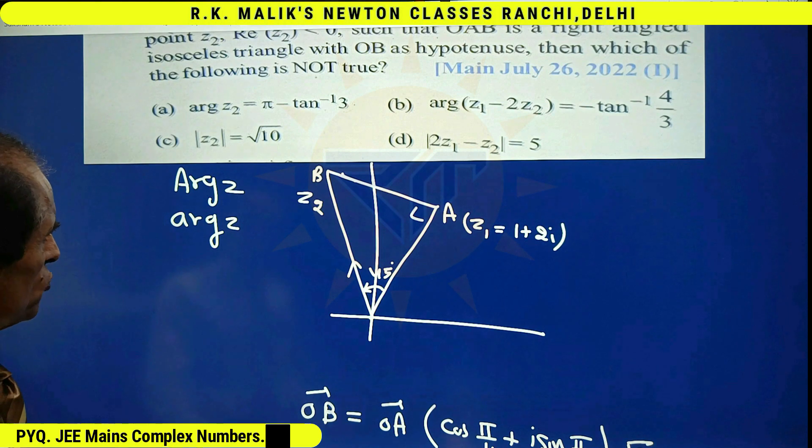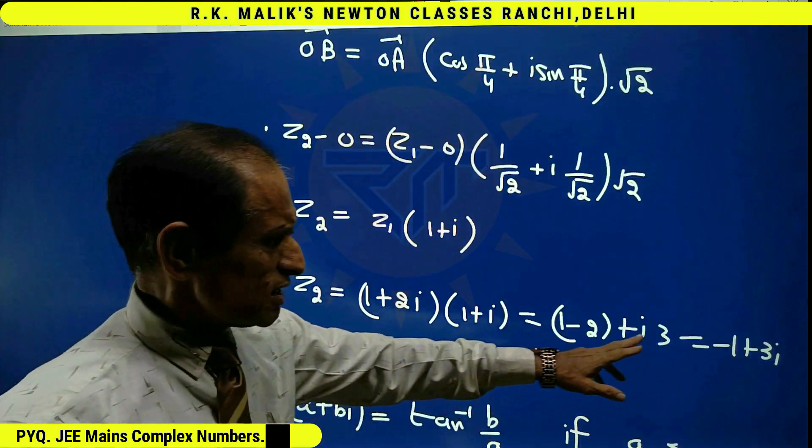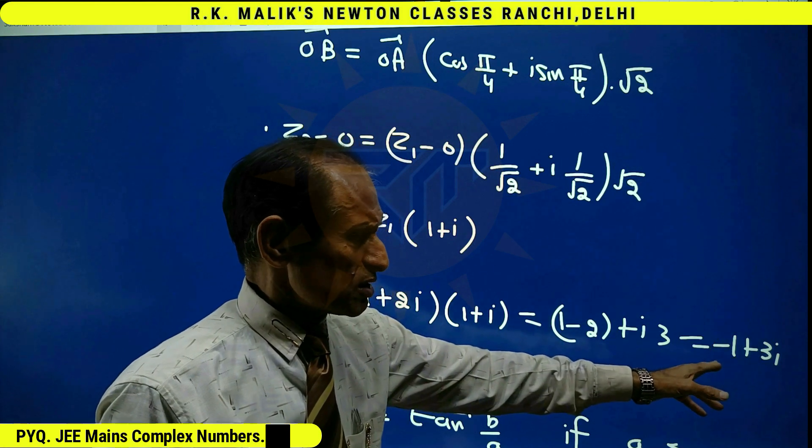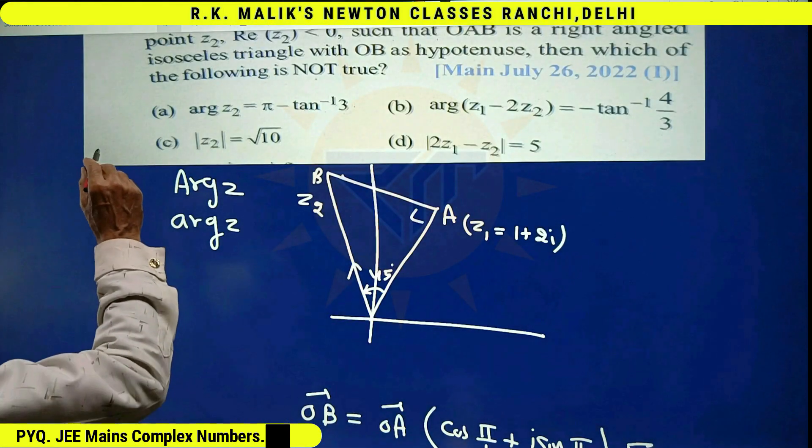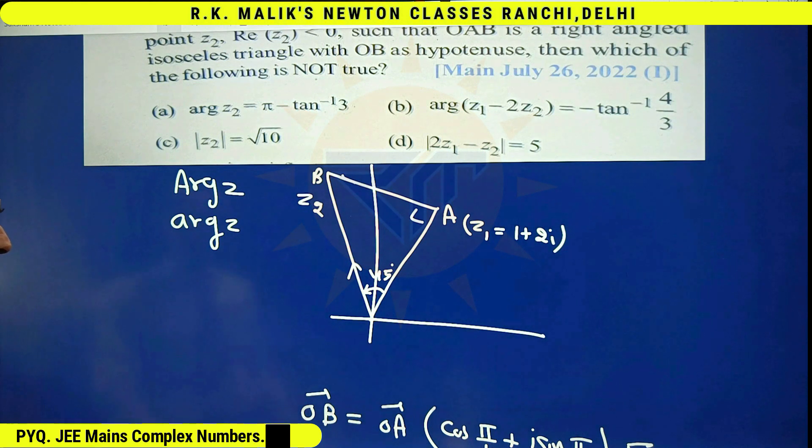The information of choice C can be checked very easily. It is clear that modulus of this complex number is root 10. Hence, I can say information of choice C is also correct.